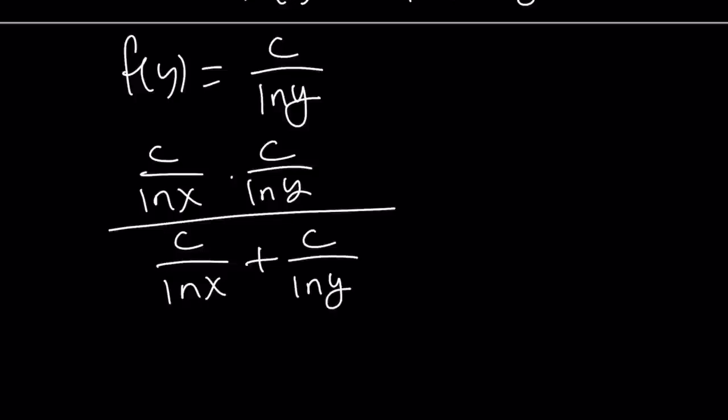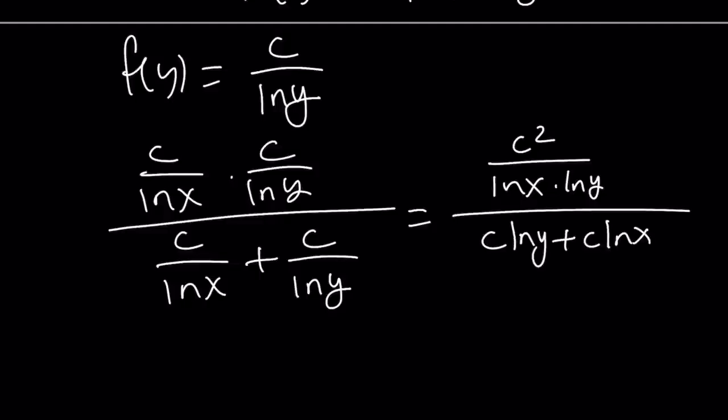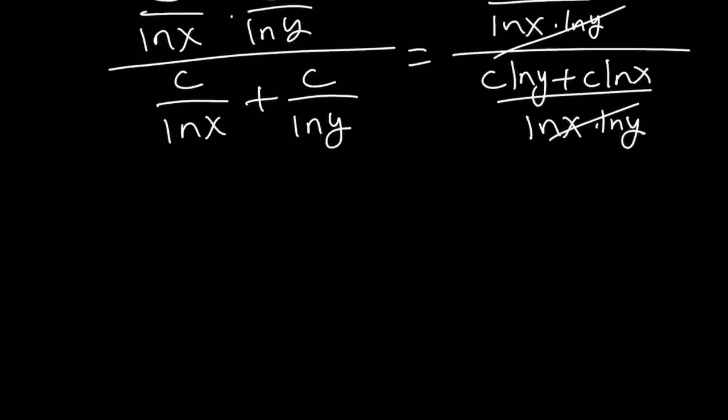Now, since we don't have a common denominator, let's go ahead and make one. This becomes c squared over ln x times ln y. And the bottom is c times ln y plus c times ln x divided by ln x ln y. If we flip and multiply, these two terms are going to cancel out. And we can also take out a c here, ln y plus ln x. One of the c's will cancel out.